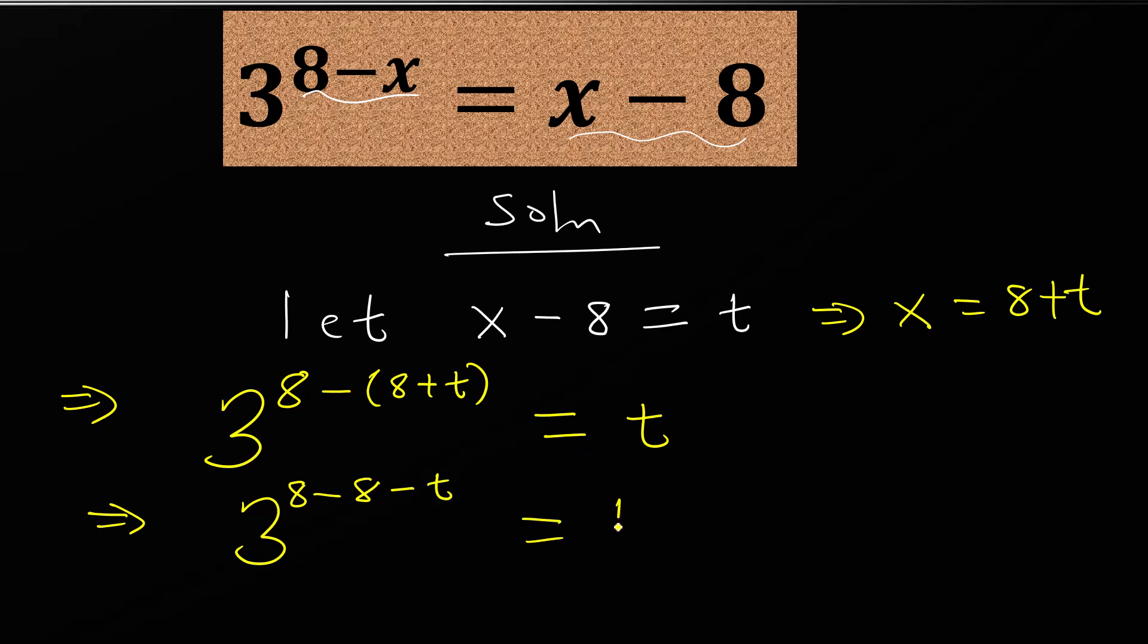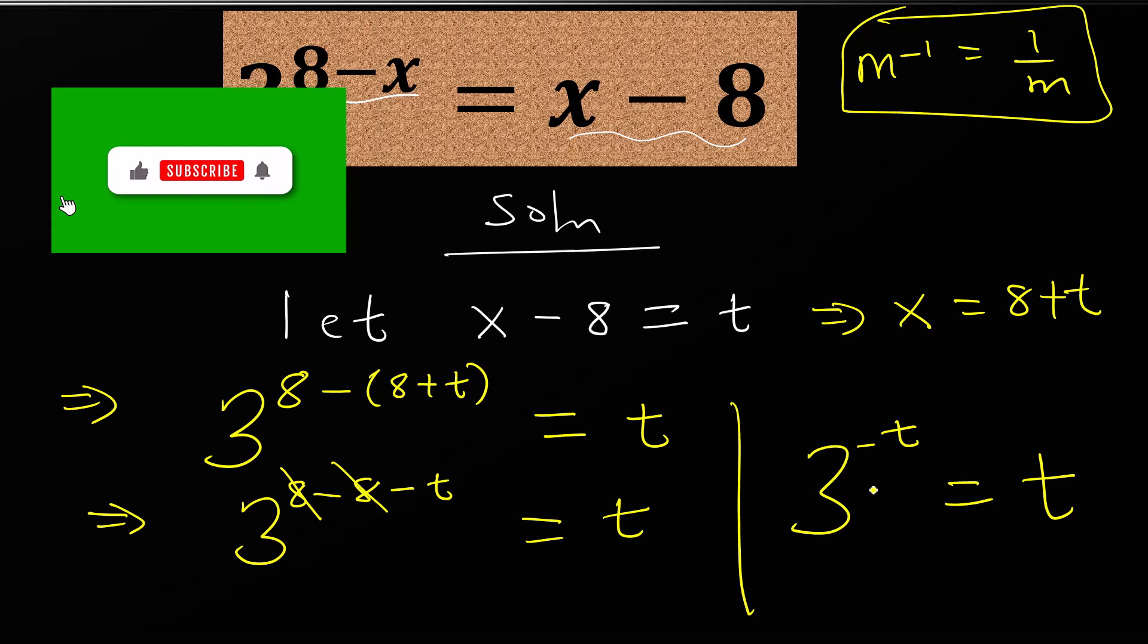The next step: 3 to the power 8 minus 8 minus t equals t. The 8s cancel, so I'll have 3 to the power minus t equals t. Now when you have M to the power minus 1, it's the same as 1 over M. So 3 to the power minus t will be 1 over 3 to the power t equals t.